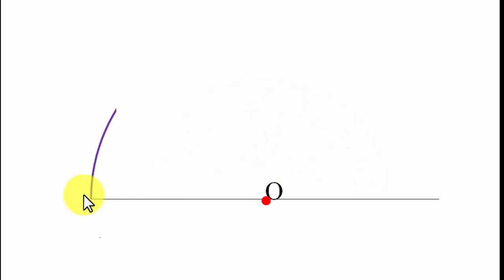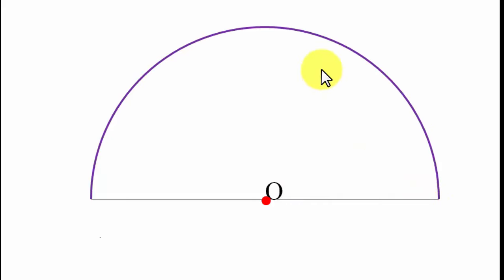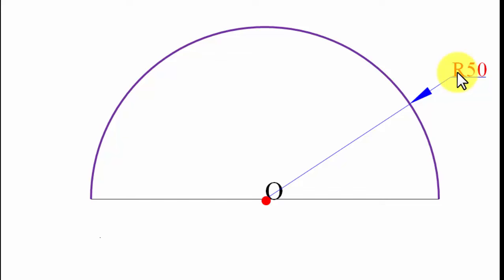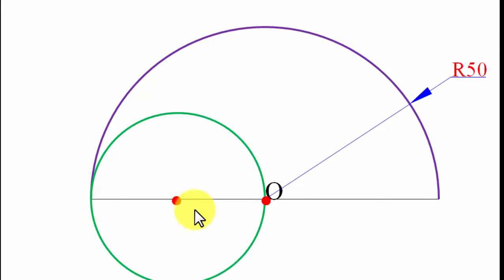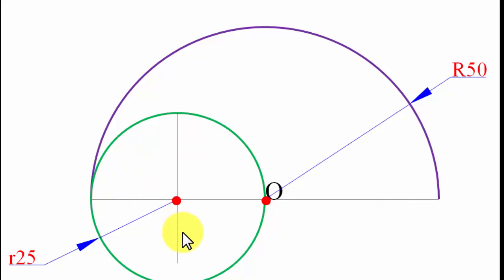Draw an arc with O as center and 50 millimeters as radius — this is the directing circle sector. Only a small portion of the directing circle is drawn, with radius 50 millimeters. Now we locate the center of the rolling circle: go inward from the arc by the rolling circle radius of 25 millimeters and place that center point. With this center and radius 25 mm, draw the rolling circle.